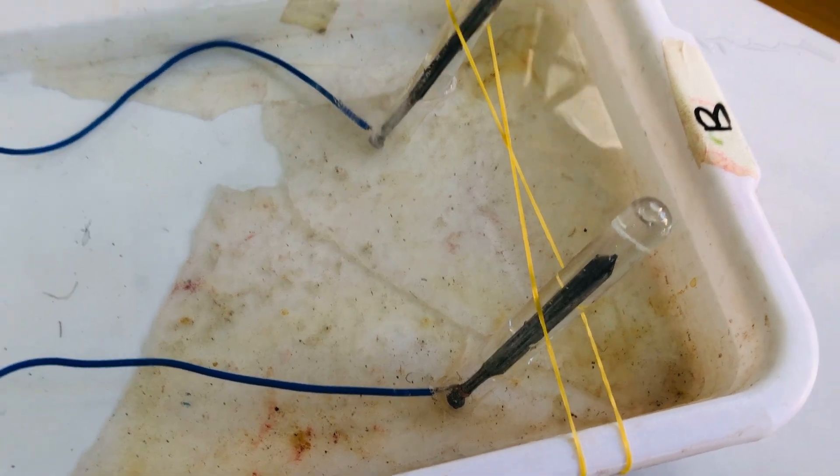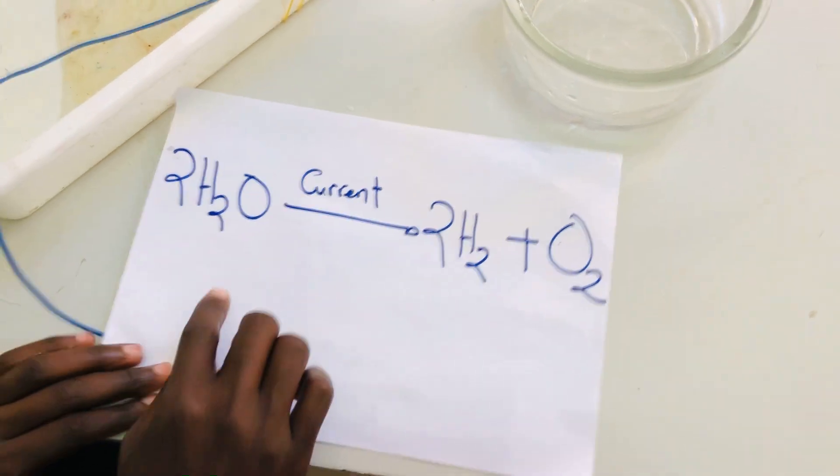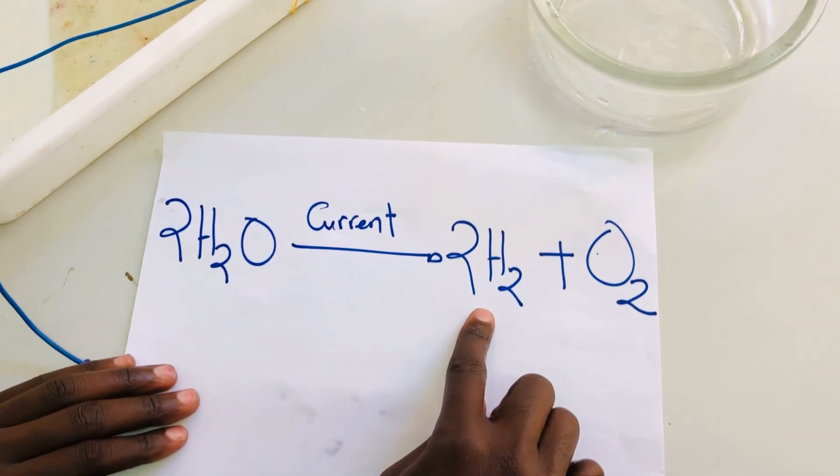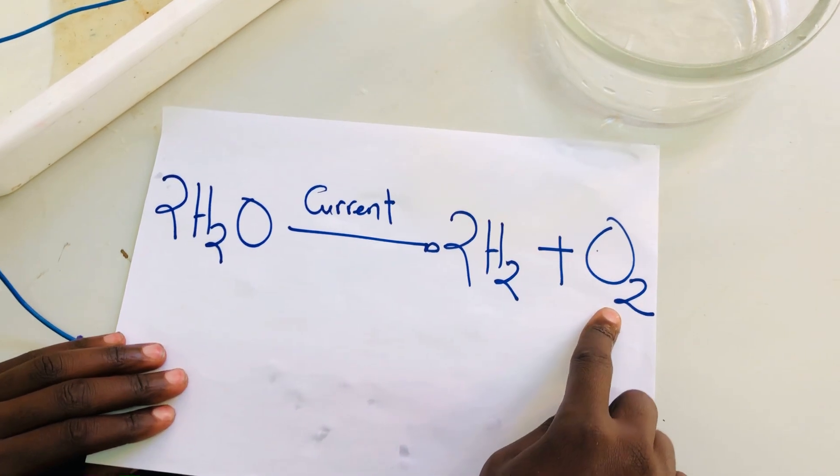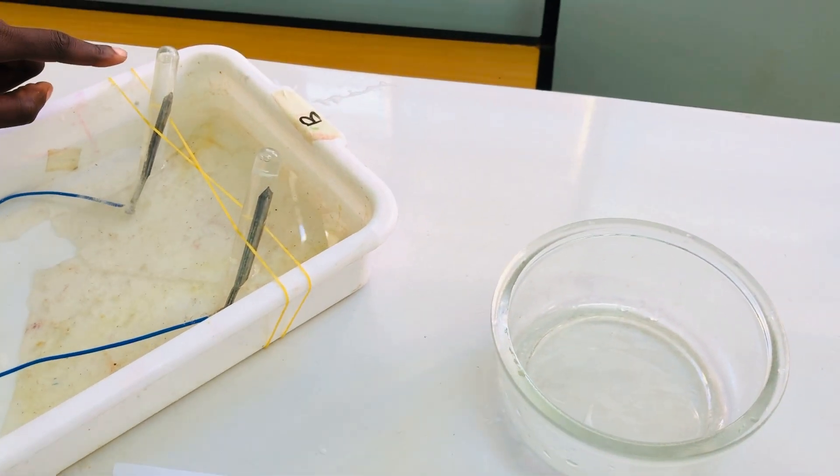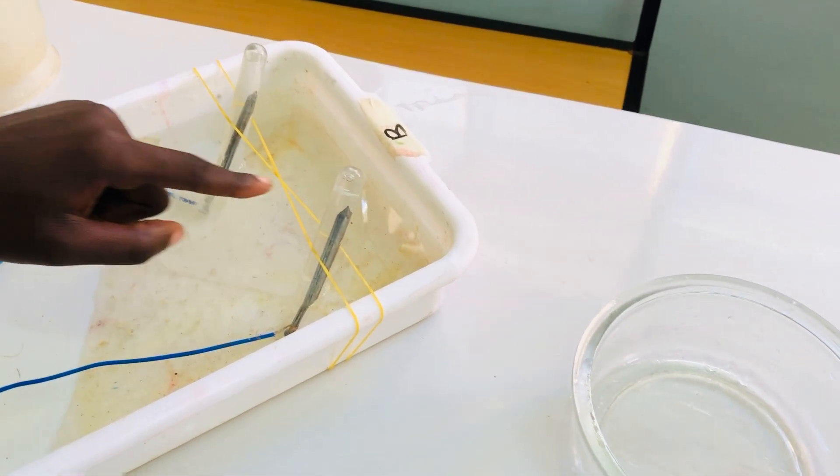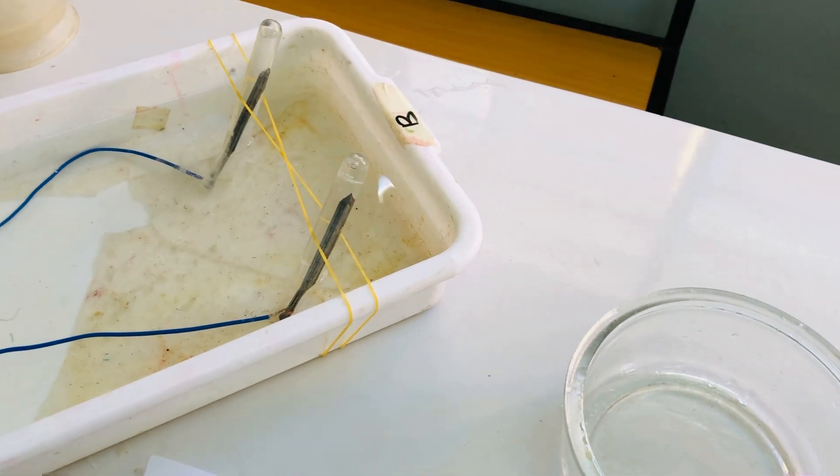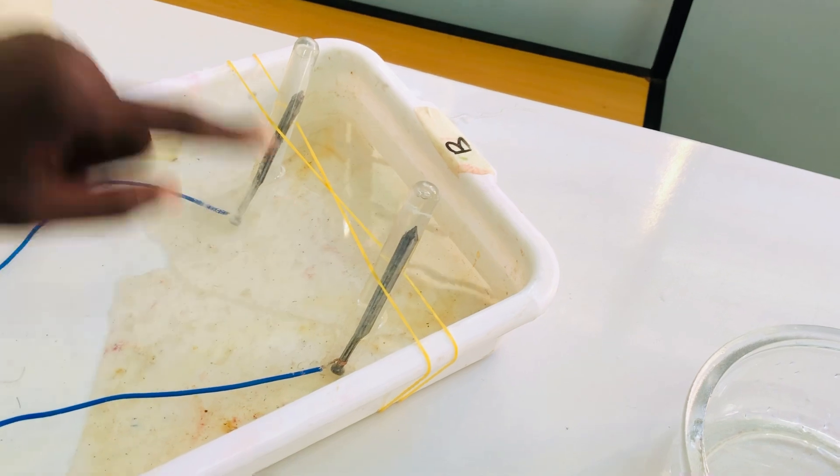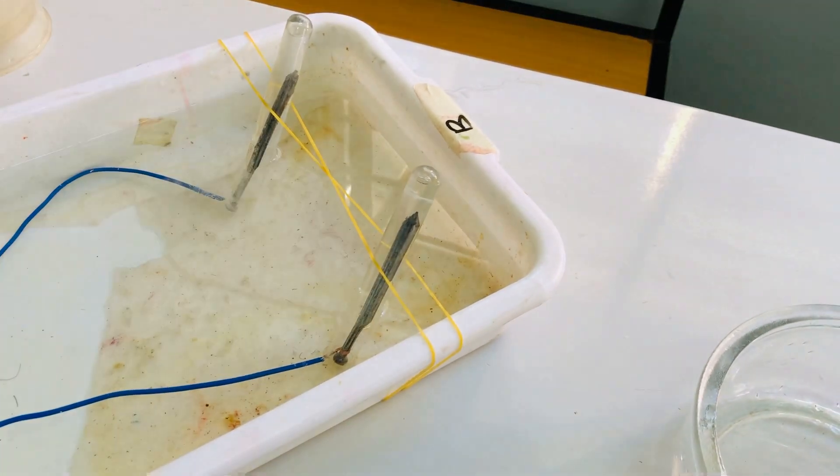Let's see the reactions. In the dissociation of water, it will end up giving two moles of hydrogen and one mole of oxygen. Here, it is two moles of hydrogen that is collected, and here it is one mole of oxygen which is collected. That's why you observe the difference between this one and this one.